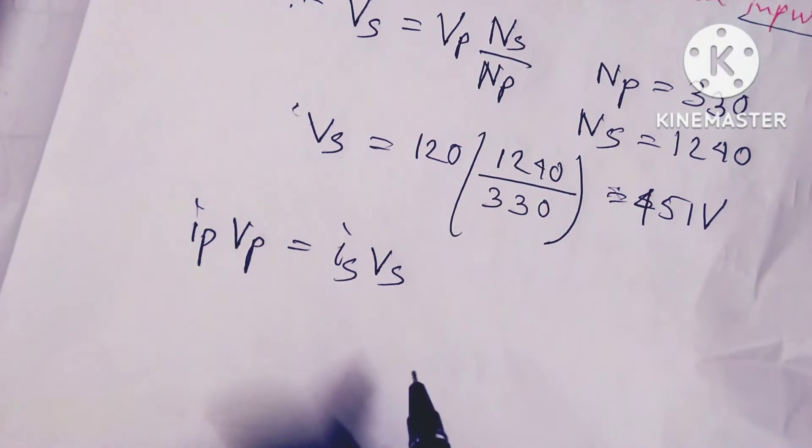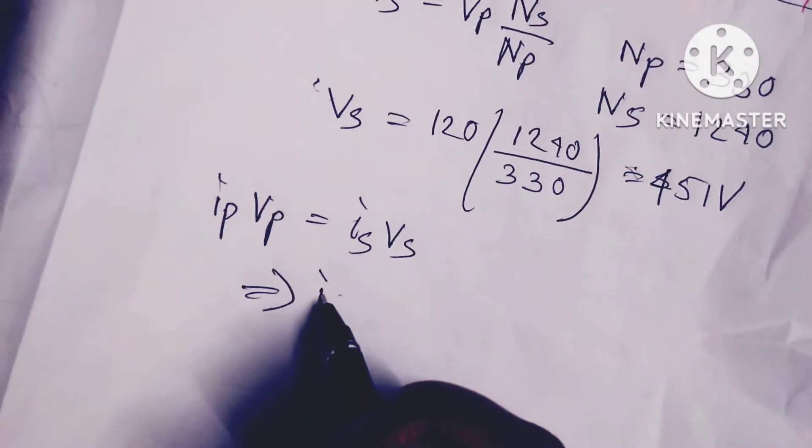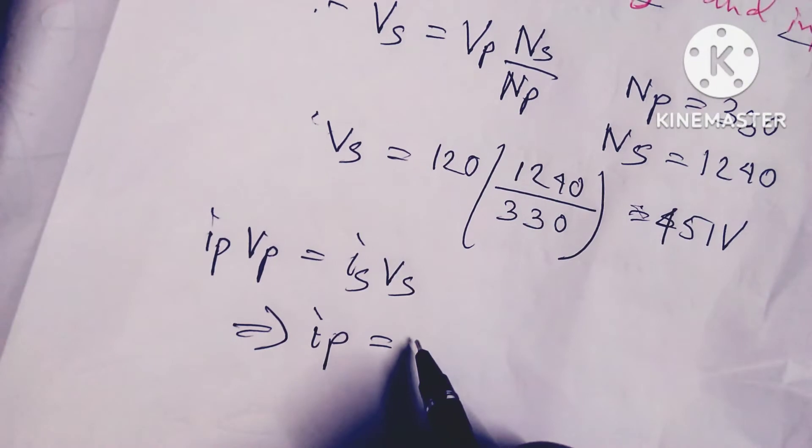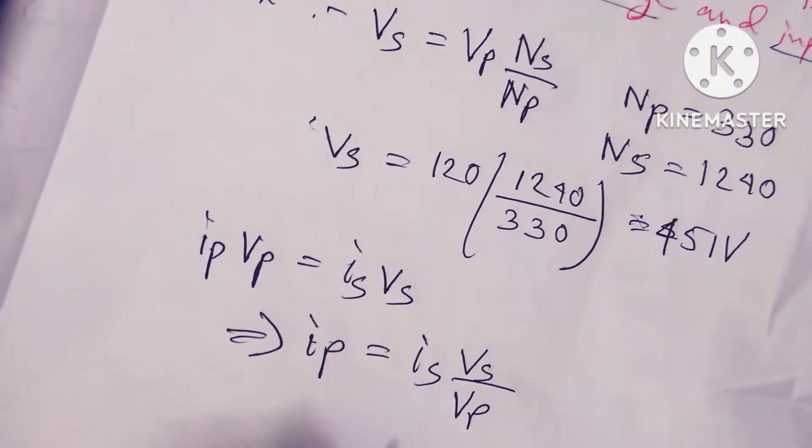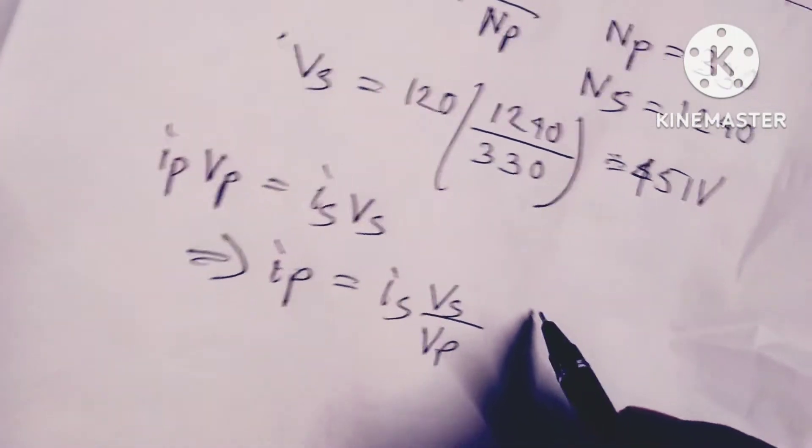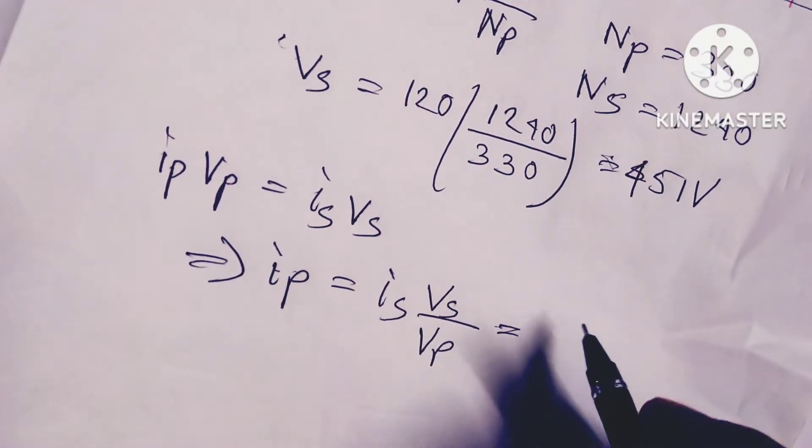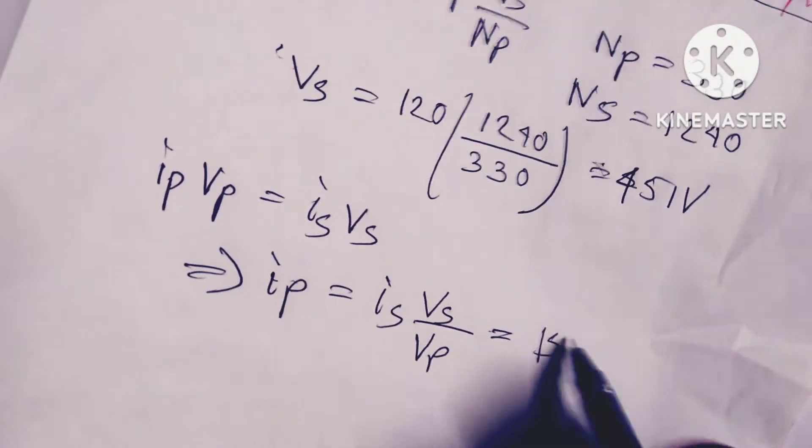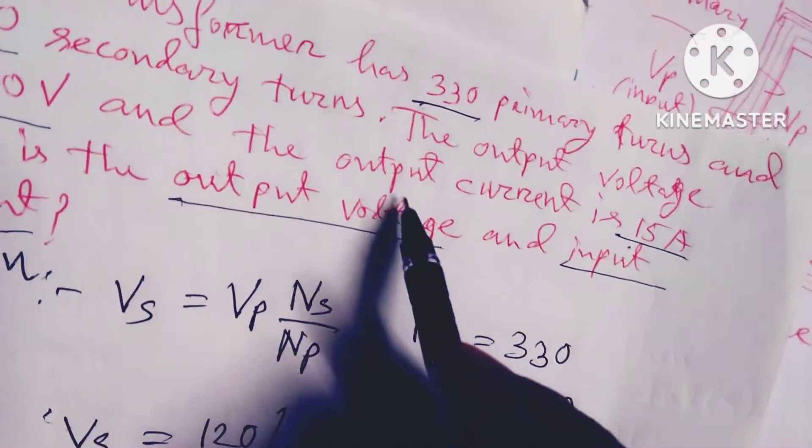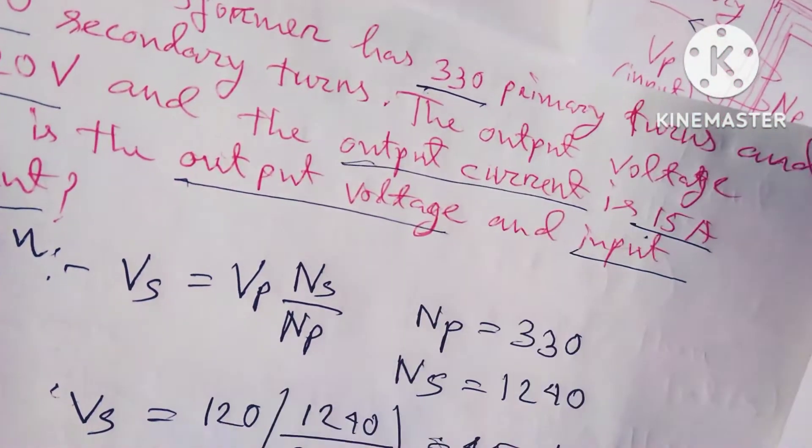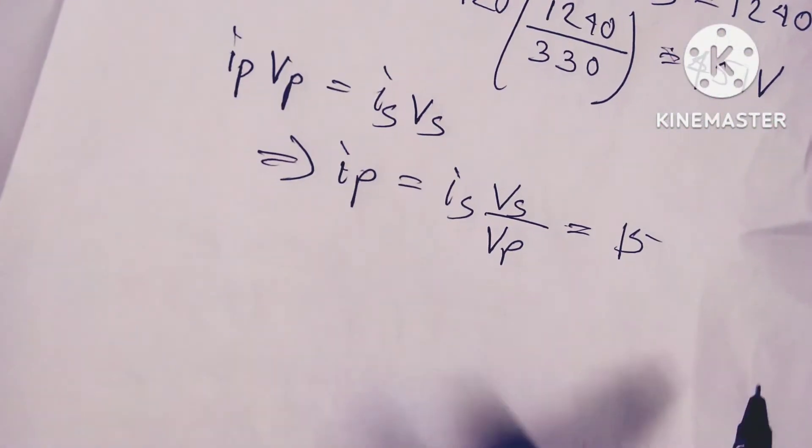So that implies Ip equals Is times Vs divided by Vp. So Is equals 15. Secondary, secondary, it is given. Check in here, 15 amperes. Output is, Is output is 15 amperes.